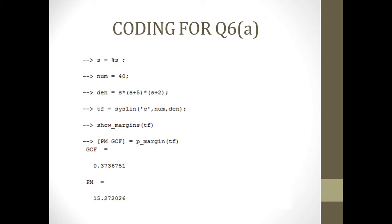First, we're going to try the coding for question 6A. First, we declare the S and the numerator which is 40 and the denominator is S times S plus 5 times S plus 2. The transfer function, we're going to show the margin of transfer function.